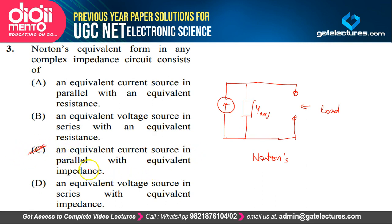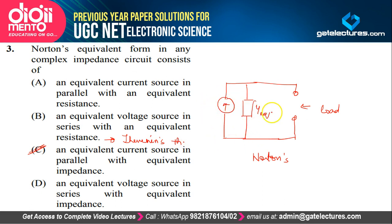Do not confuse between impedance and resistance. Since we are applying this in parallel with some source, we consider impedance. Option B — equivalent voltage source in series with equivalent resistance — is actually the statement of Thevenin's theorem. In Norton's theorem we consider a current source with equivalent impedance, while in Thevenin's theorem we consider a voltage source with equivalent resistance.